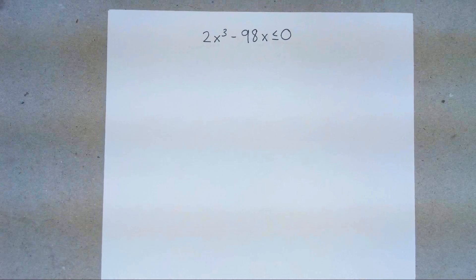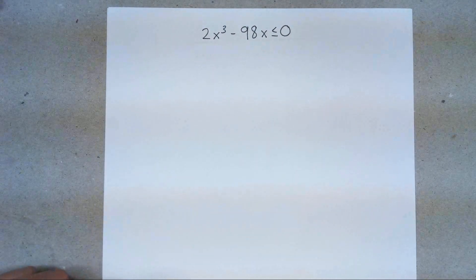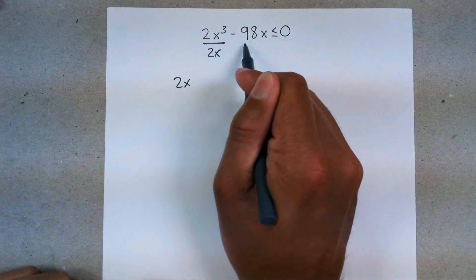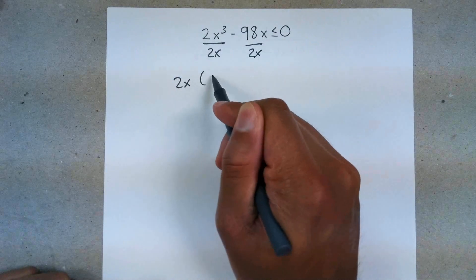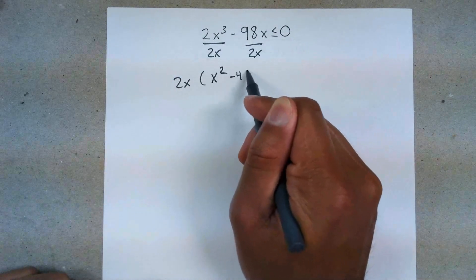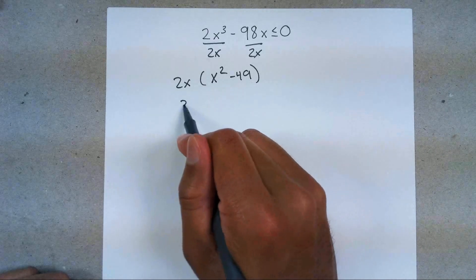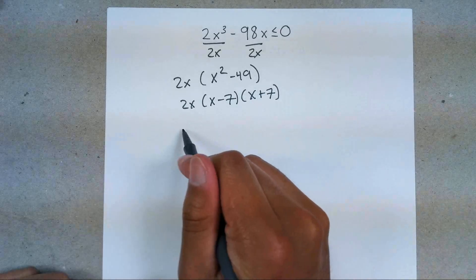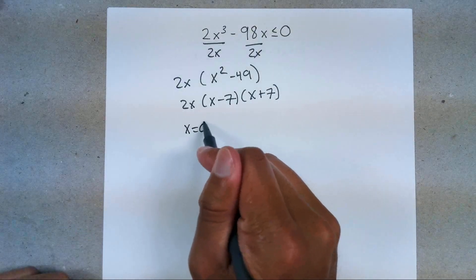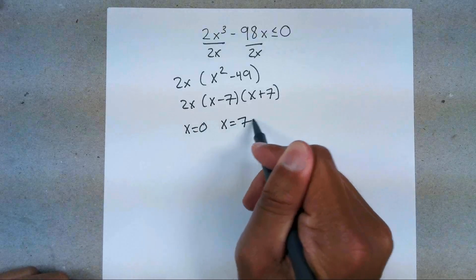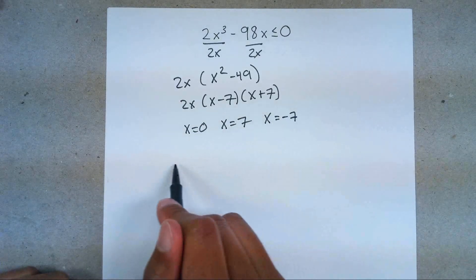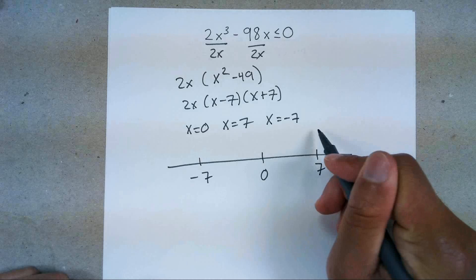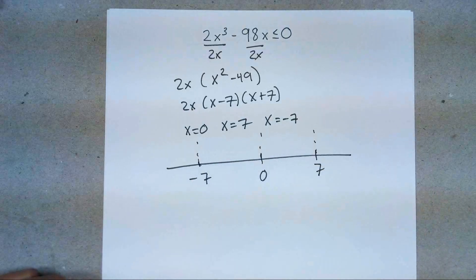The next one is 2x³ − 98 ≤ 0. First, factor out. I can take out a 2x, which gives me x² − 49. Then I notice there's a difference of squares, so I can factor further. Set them all equal to zero: anytime there's an x on the outside, it equals zero; x = 7 and x = −7. Next step: graph all these numbers on a number line — negative 7, 0, positive 7 — and draw lines to separate the boundaries.